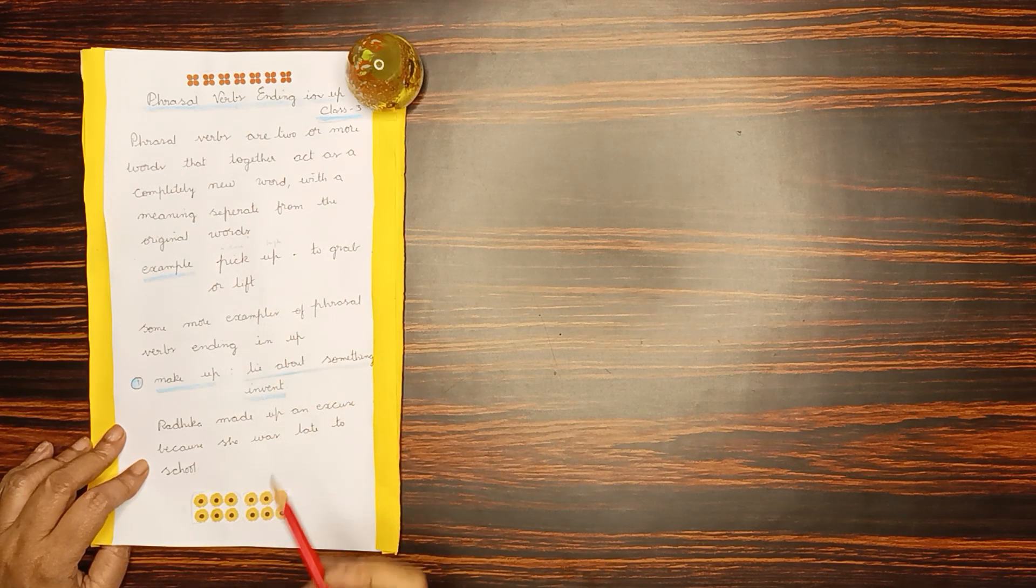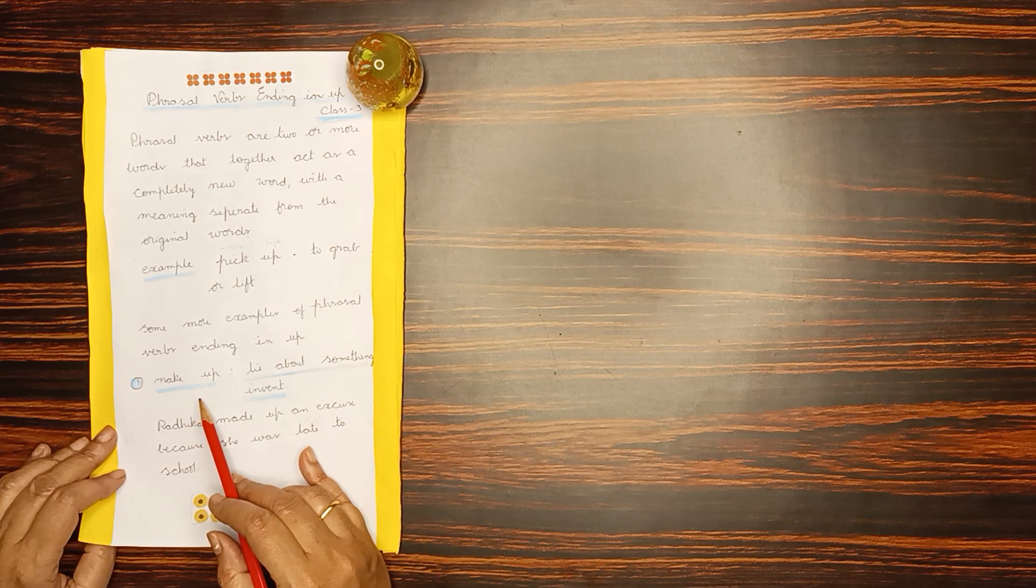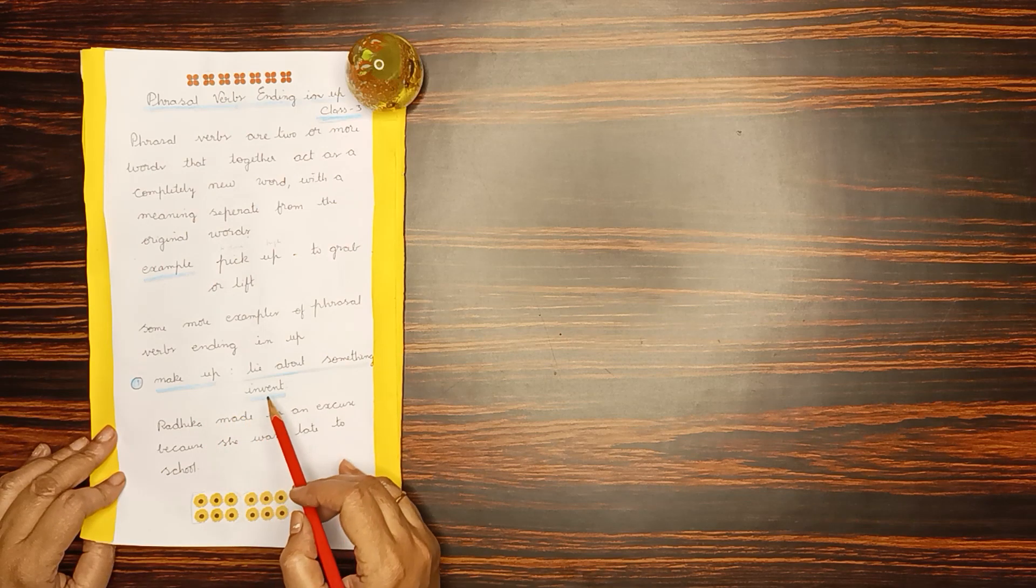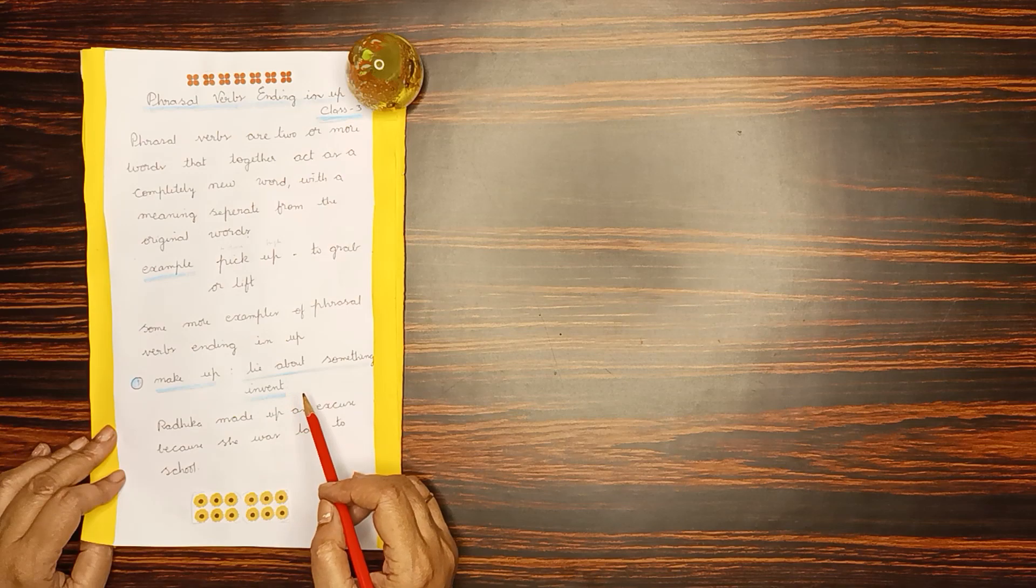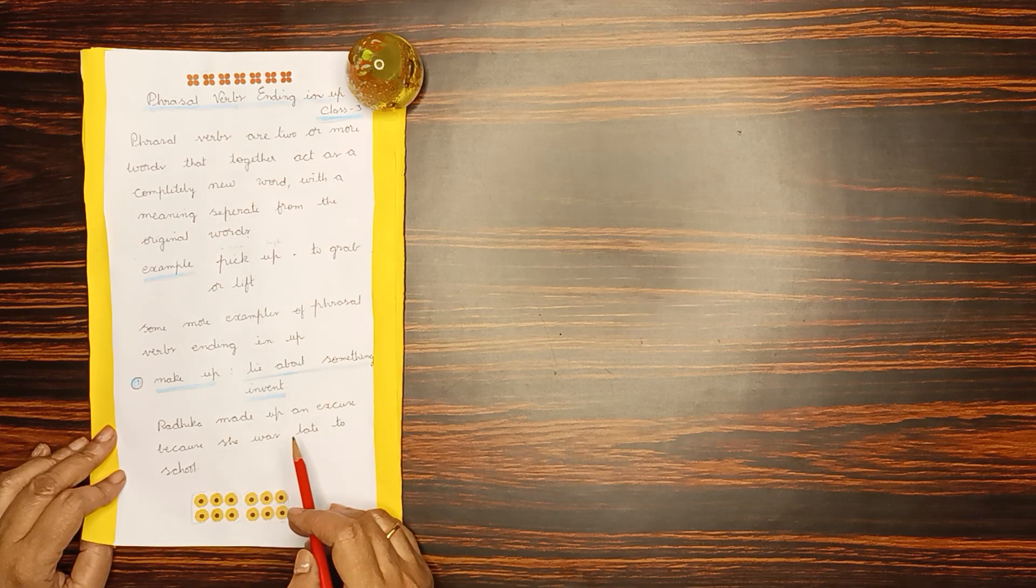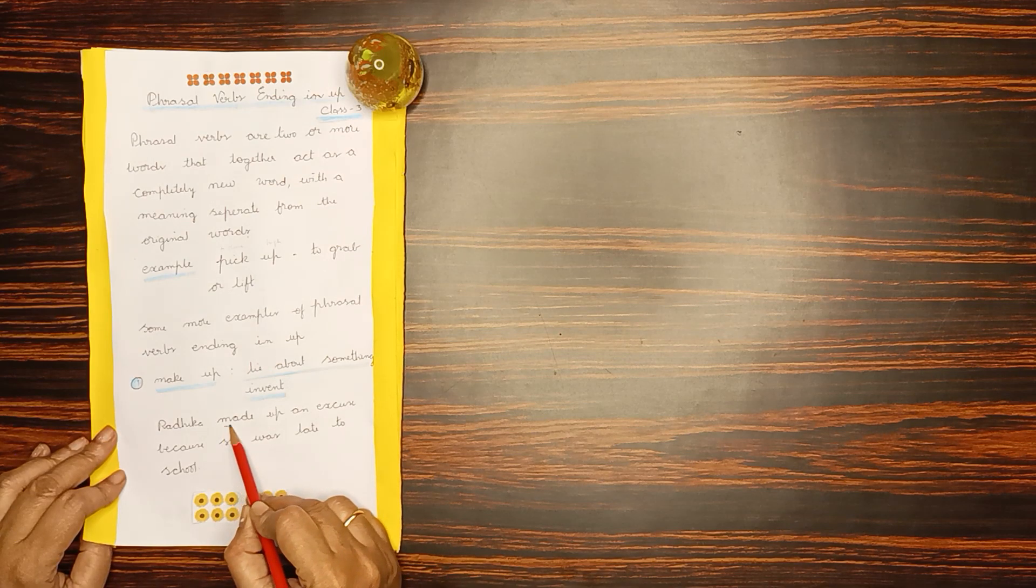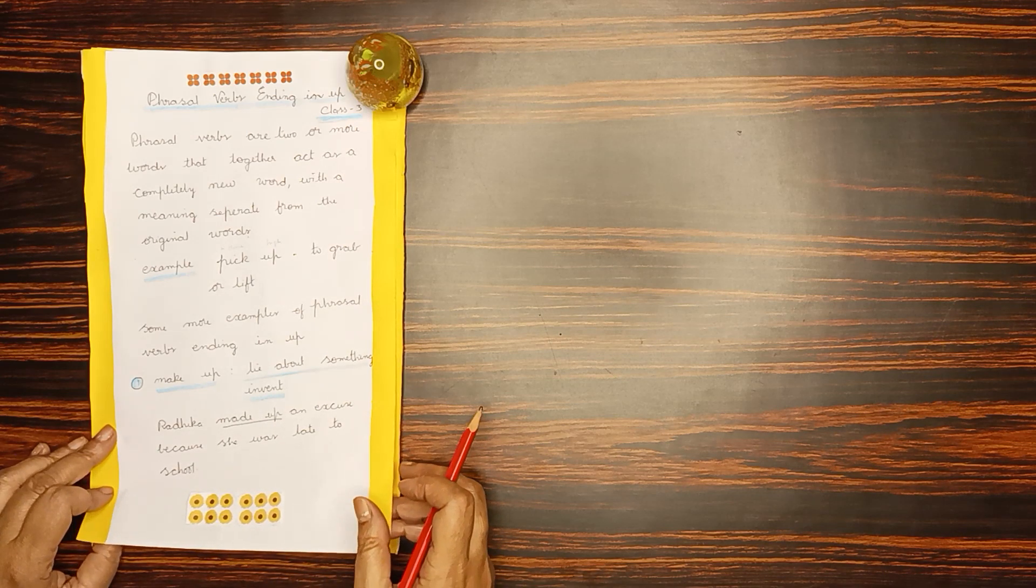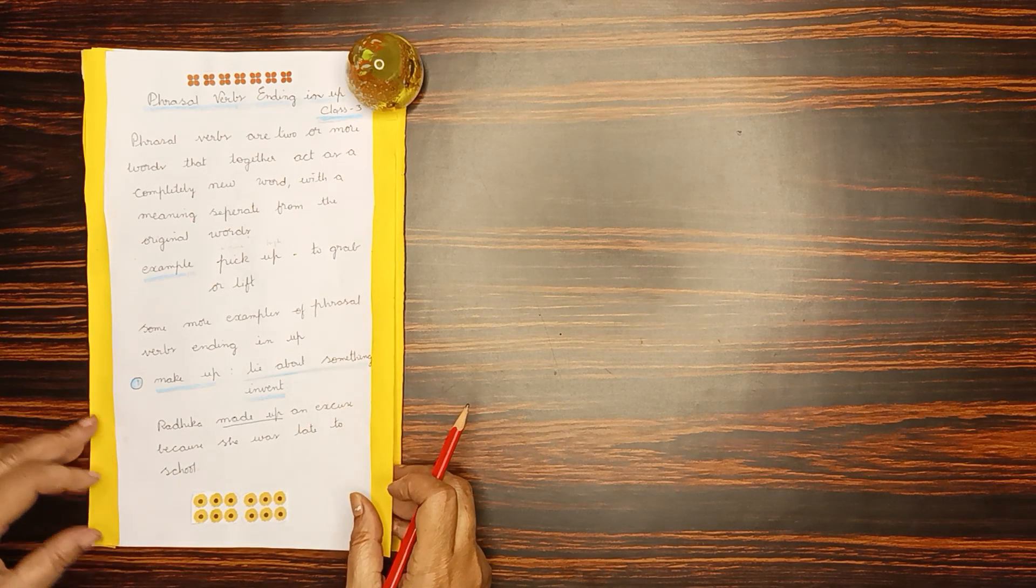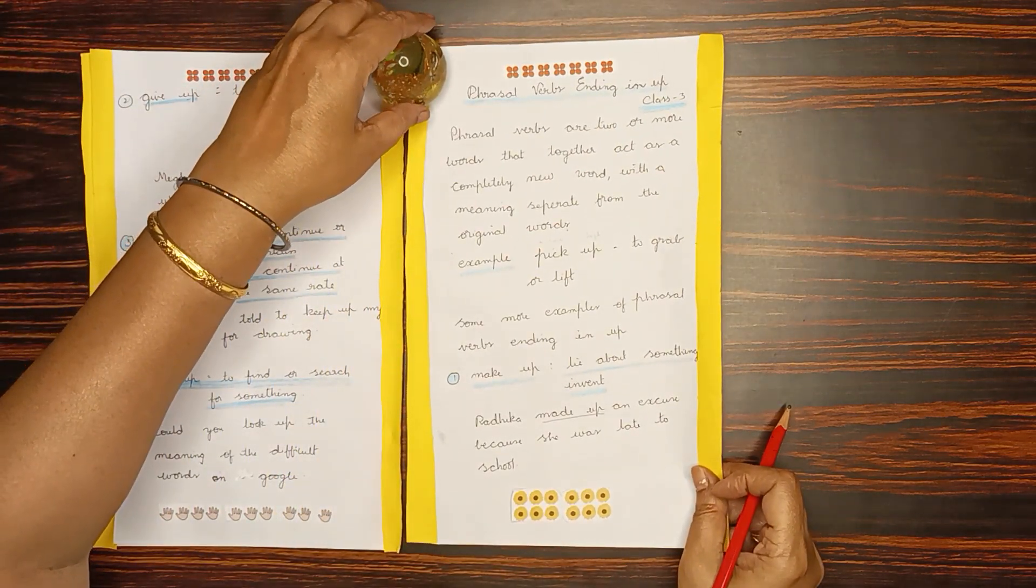Some more examples of phrasal verbs ending in up. First one is makeup. The meaning of makeup is lie about something or invent. For example, Radhika made up an excuse because she was late to school. Made up is a phrasal verb.